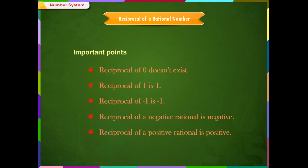Thus, we arrive at the following important points regarding reciprocal of rational numbers: Reciprocal of 0 doesn't exist. Reciprocal of 1 is 1. Reciprocal of (-1) is (-1). Reciprocal of a negative rational is negative. Reciprocal of a positive rational is positive.